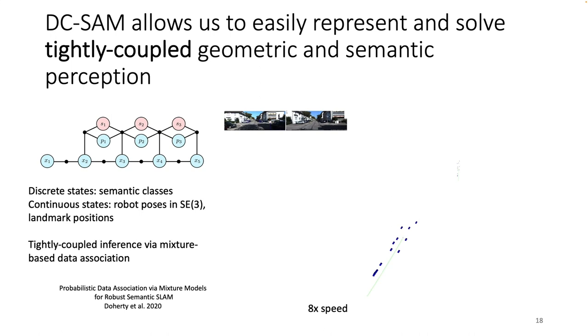DC-SAM also allows us to easily represent and solve tightly coupled geometric and semantic perception problems. Here, we're doing semantic SLAM on the KIDI dataset with mixture-based data association to deal with ambiguity, and we're inferring the vehicle trajectory as well as landmark positions and semantic classes. What's really cool about this is that you can write down this factor graph and DC-SAM will just solve it. This isn't something you could easily do with existing libraries.